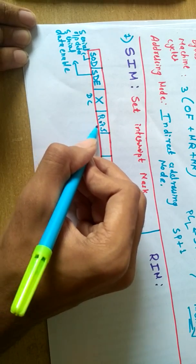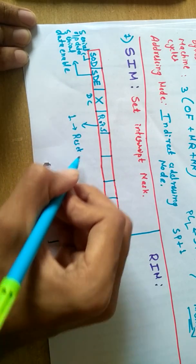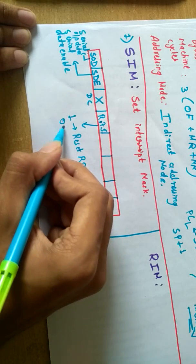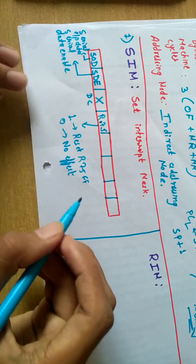Setting this bit to one will reset the RST 7.5 flip-flop and zero will have no effect. Please note: one will reset and zero has no effect on RST 7.5 flip-flop.